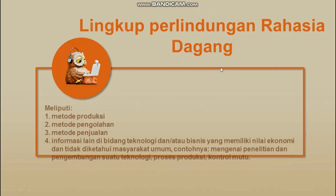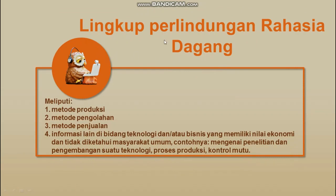Lingkup perlindungan rahasia dagang itu meliputi yang pertama metode produksi, proses produksi; yang kedua metode pengolahannya; yang ketiga metode penjualan; dan yang keempat informasi lain di bidang teknologi dan/atau bisnis yang memiliki nilai ekonomi dan tidak diketahui masyarakat umum. Contohnya adalah mengenai penelitian dan pengembangan suatu teknologi, proses produksi, dan juga kontrol mutu atau quality control.